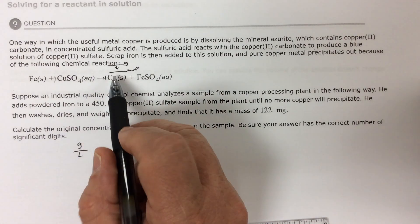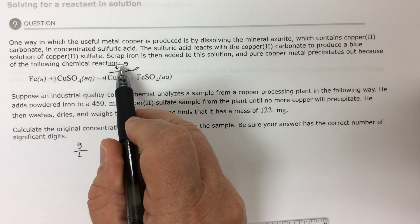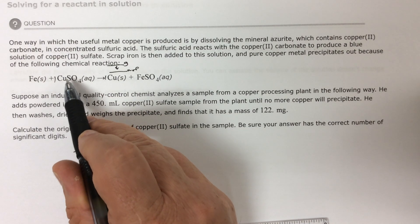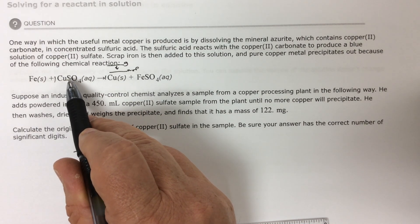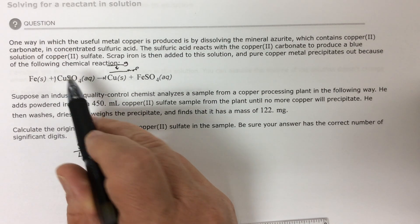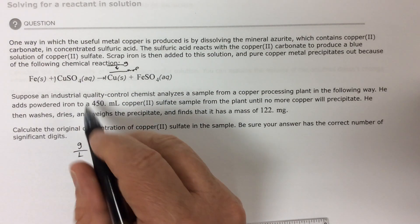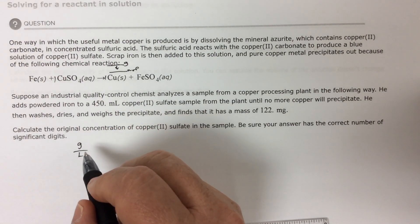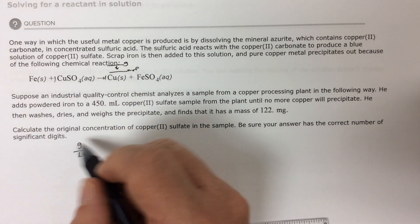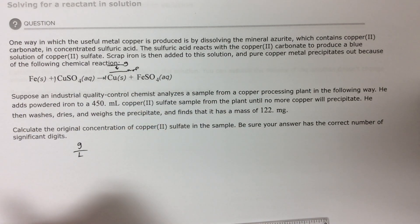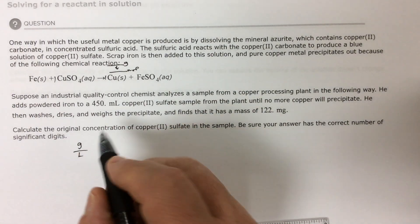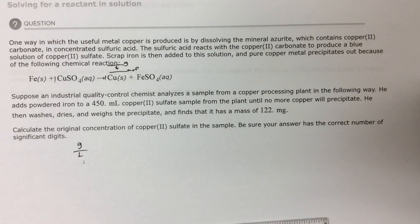So we need to know, we're given milligrams of copper. We need to know how many grams of copper sulfate that that is. And then we need to know how much copper sulfate in terms of volume that they're talking about. So we know how many grams of this is within the solution to find out the concentration.